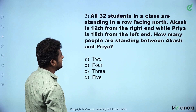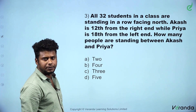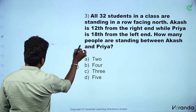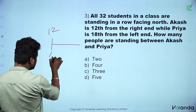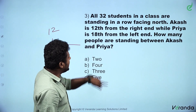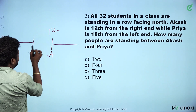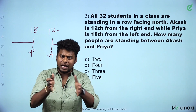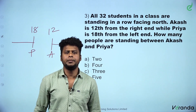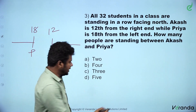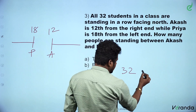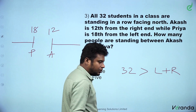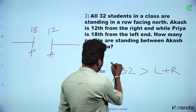All 32 students in a class are standing in a row facing north. Akash is 12th from the right end. Priya is 18th from the left end. Now, in this case, we check whether the two ends have overlap or non-overlap. If the total is greater than left-end and right-end value, that is non-overlapping.